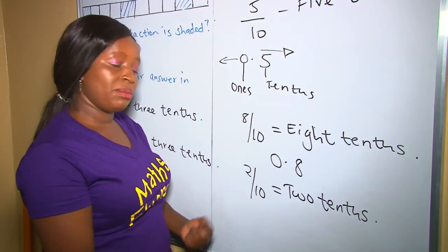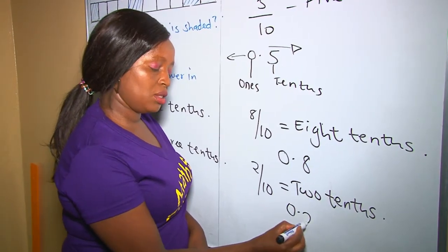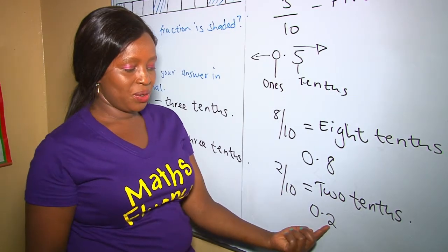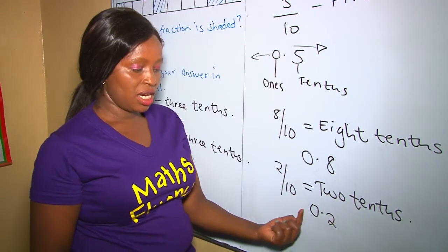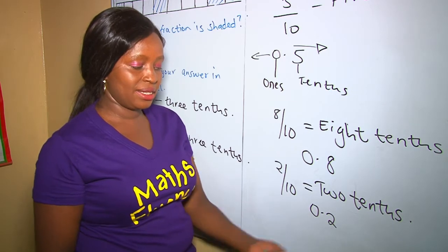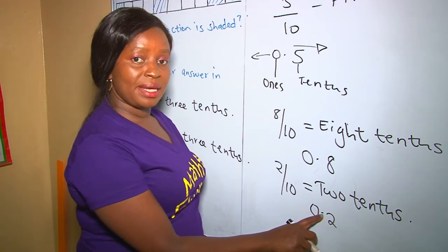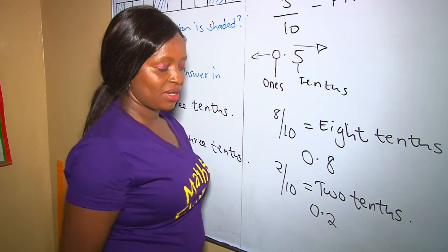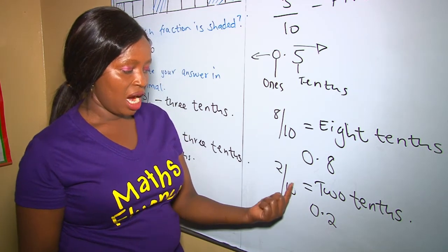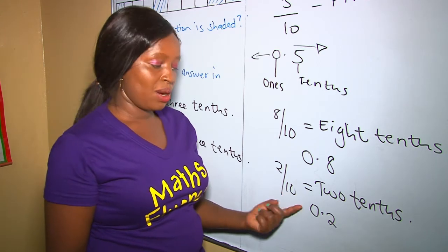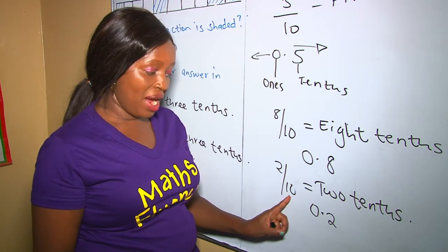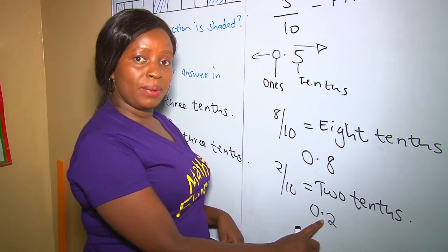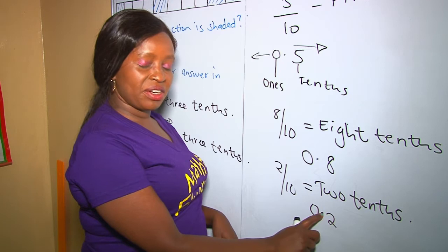Two tenths as a decimal is going to be 0.2. The place value here is tenths — that's why we say two tenths. At the decimal place the place value is always tenths. As you can see, there is one zero at the denominator, which gives us one decimal place.